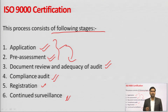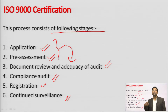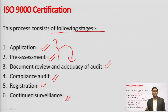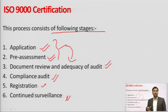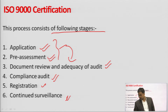After registration in ISO 9000, continued surveillance follows — yearly, half-yearly, or quarterly depending on the company. The ISO team visits the company and reviews all documents, processes, budgets, and multiple quality parameters repeatedly. That means you are under continued surveillance by this organization.